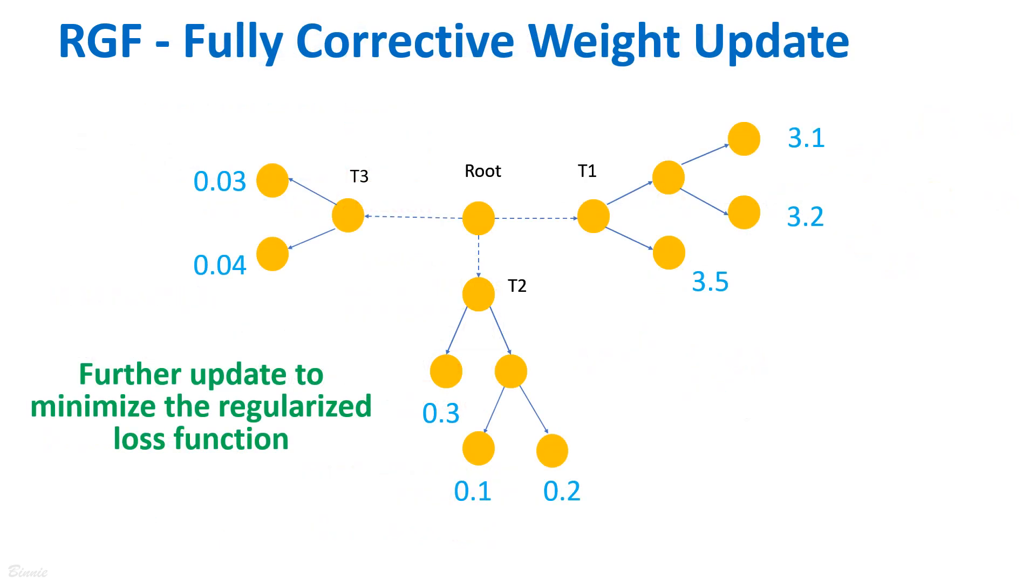Moreover, RGF optimizes the leaf weight for the entire forest after the forest structure is fixed. This fully corrective update is the second main component of RGF.